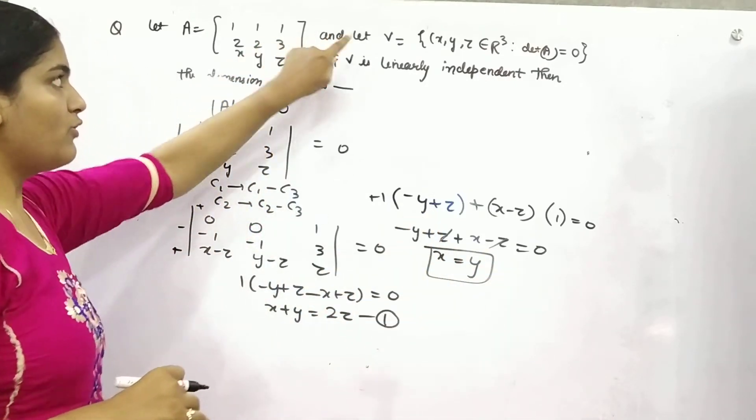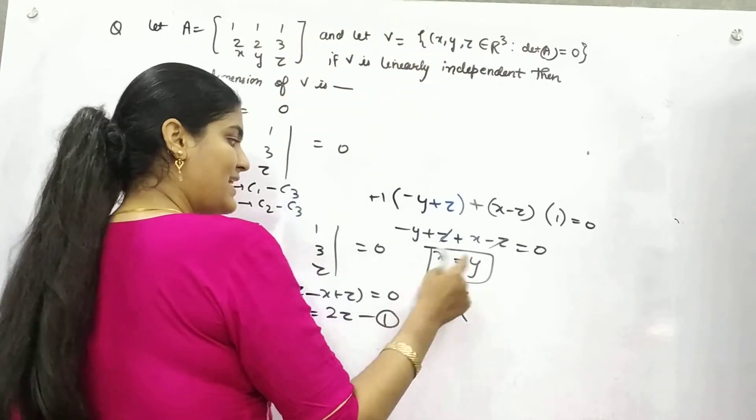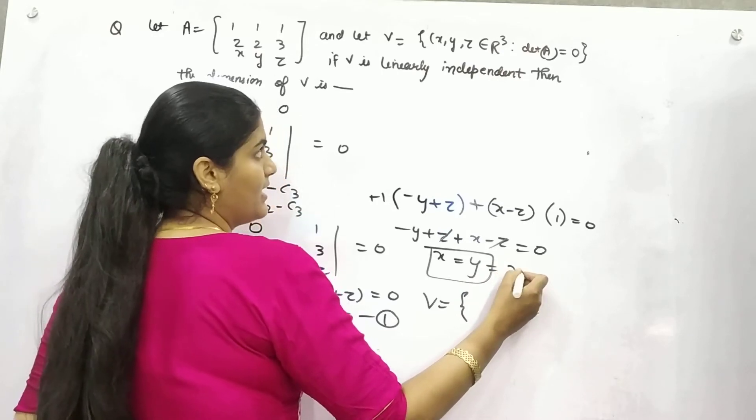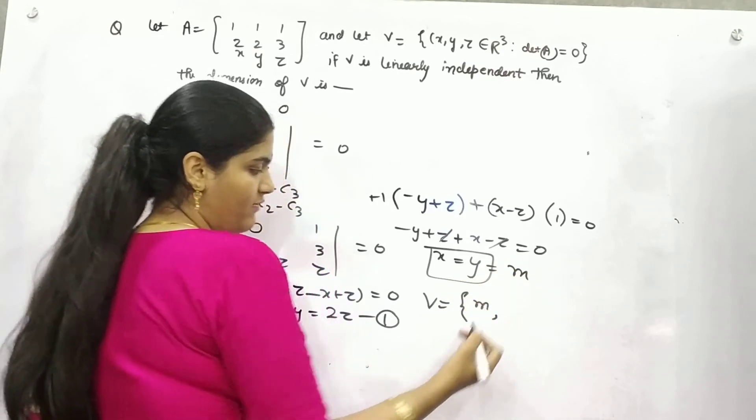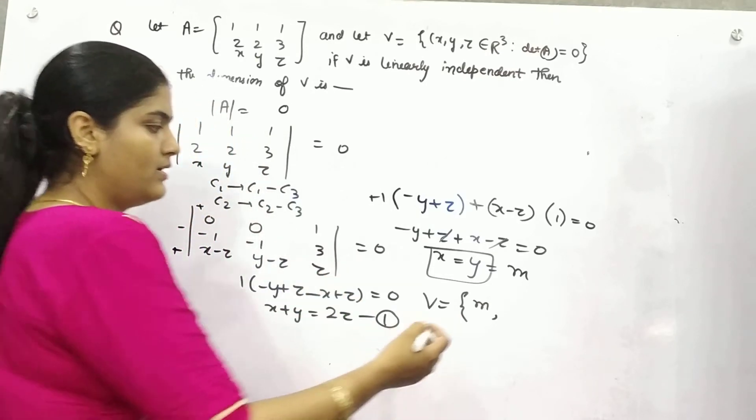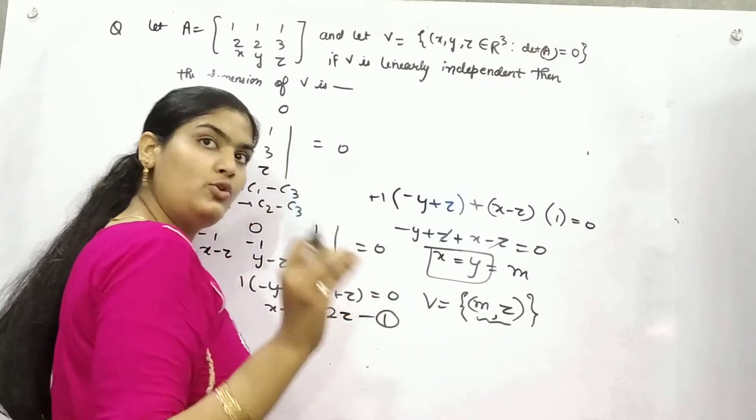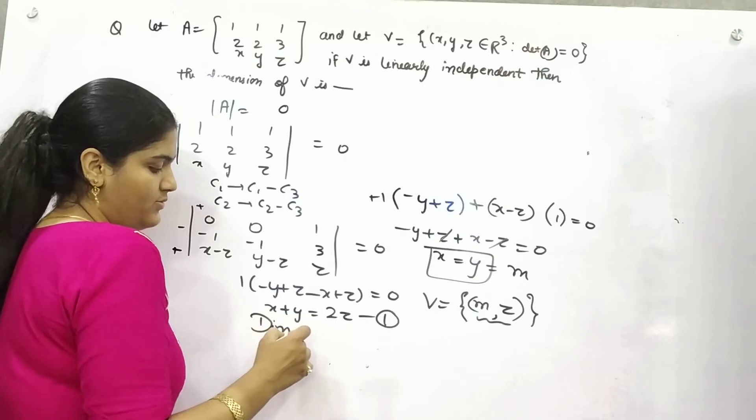So your V will be in the form of x, y, and z, but x equals y. So let's say this is anything in the form of n. So x and y are in the form of n, and z is there. So this is dependent on only two variables, so the dimension will be two.